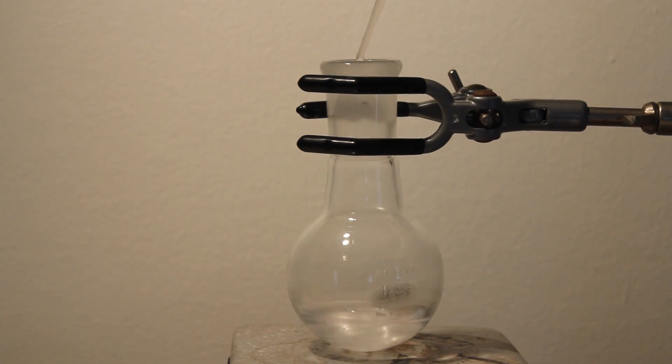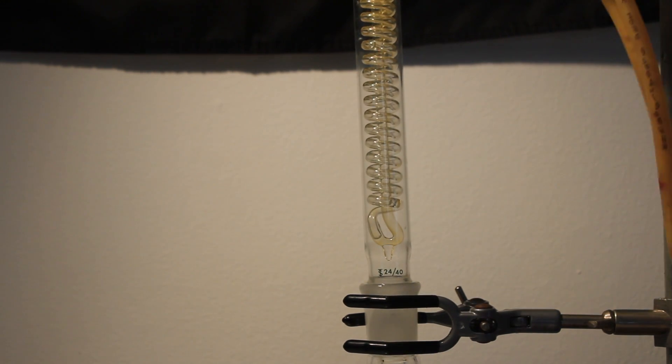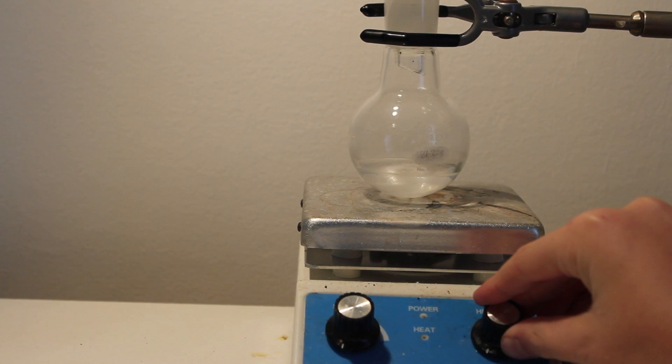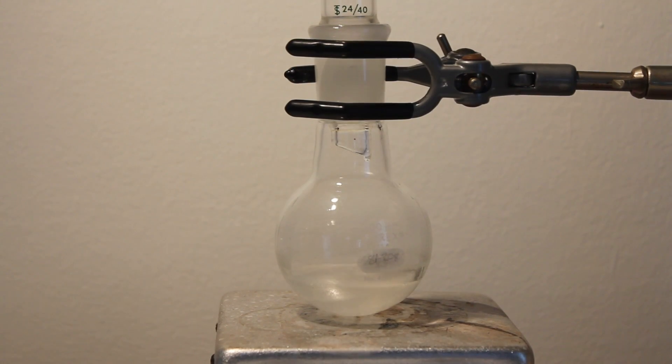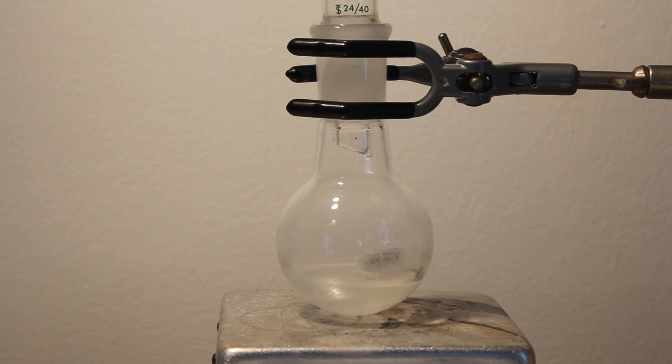Then add 1 milliliter of concentrated sulfuric acid. Attach a reflux condenser, then turn the hot plate on medium heat. Note the time when the mixture starts refluxing.